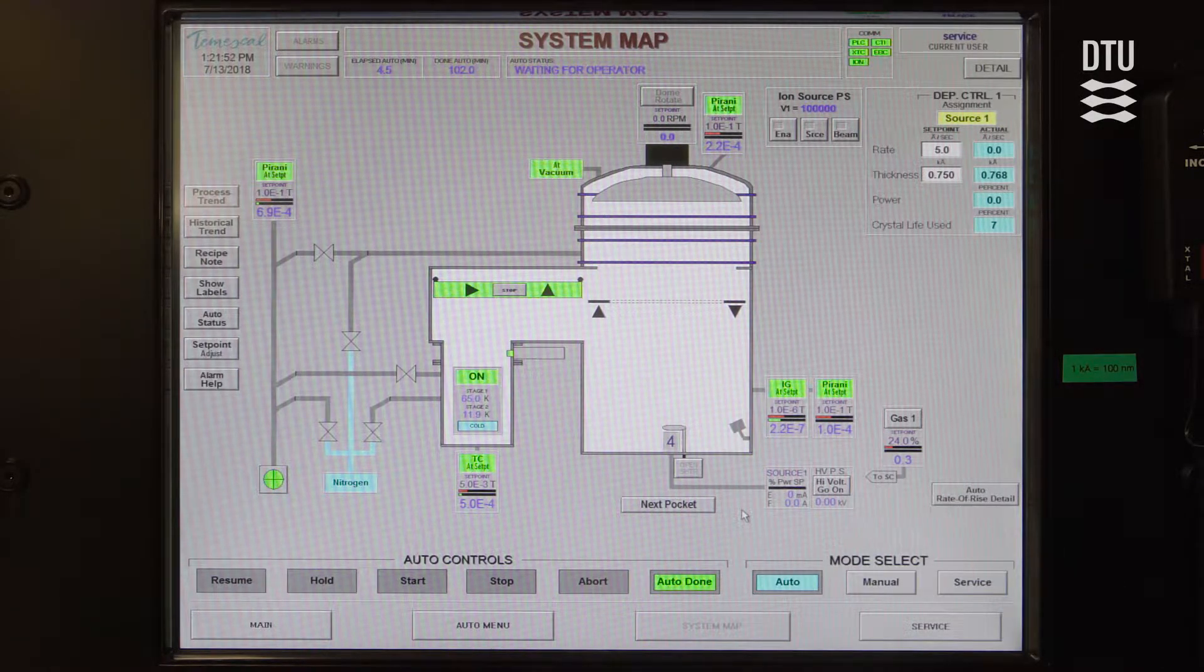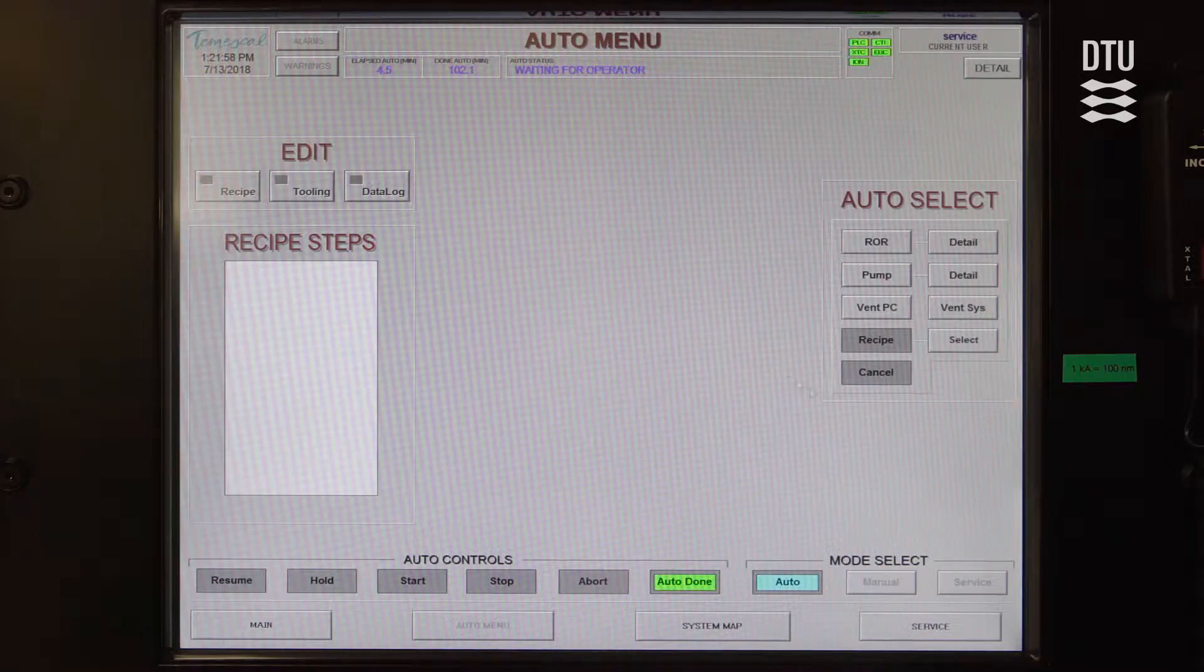So we are ready to start the deposition recipe. We are going to the auto menu and we go to the auto select pane and we select our recipe.